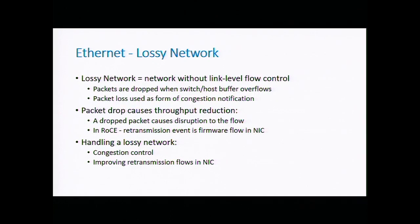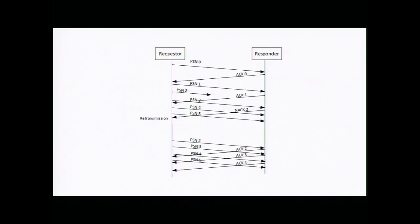We can manage packet loss or congestion in two ways: improve the hardware to handle retransmission flows faster — something we worked on in ConnectX-6 — or do congestion control at the link layer. From a RoCE perspective, when a packet is dropped, PSN — packet sequence number — based retransmission kicks in. If PSN number 2 was dropped, we must retransmit not only that packet but everything from that packet onward. This is due to the way RoCE works, unlike InfiniBand where packet loss essentially doesn't occur.